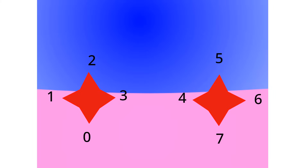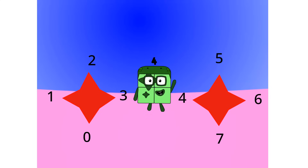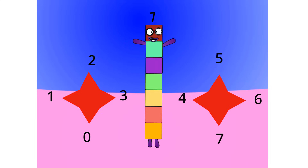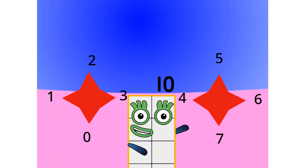This base has 8 digits: 0, 1, 2, 3, 4, 5, 6, and 7. Let's count in octal: 1, 2, 3, 4, 5, 6, 7, 8. Do you want to see another base?